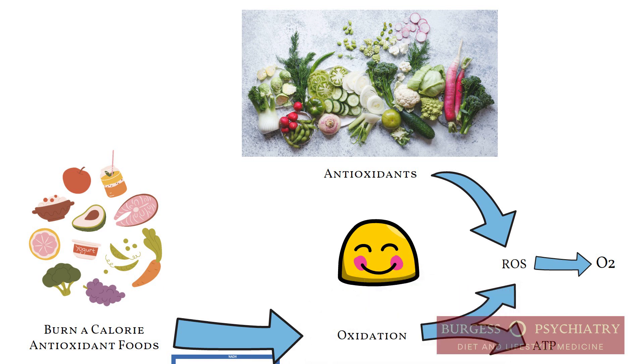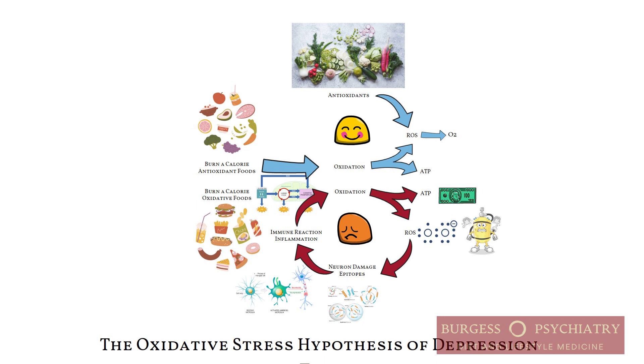And so now you burned a calorie, and you did so without causing any neuronal damage. That is the oxidative stress hypothesis of depression and how oxidative stress impacts the central nervous system.